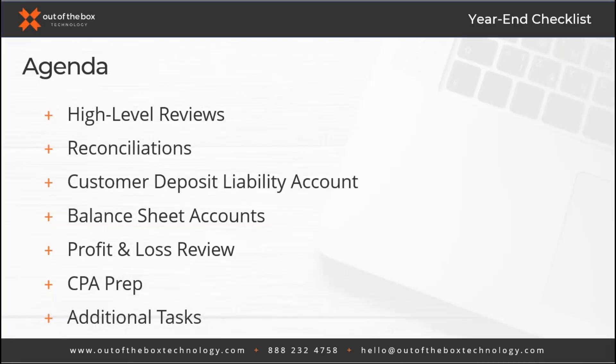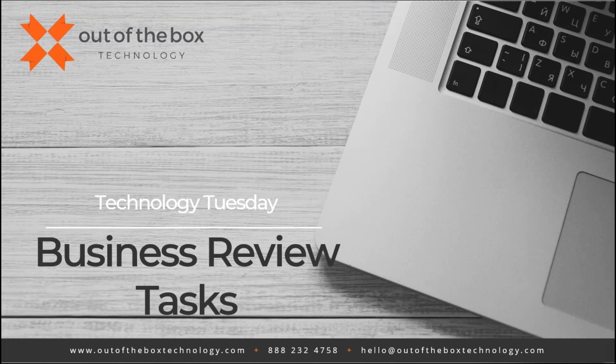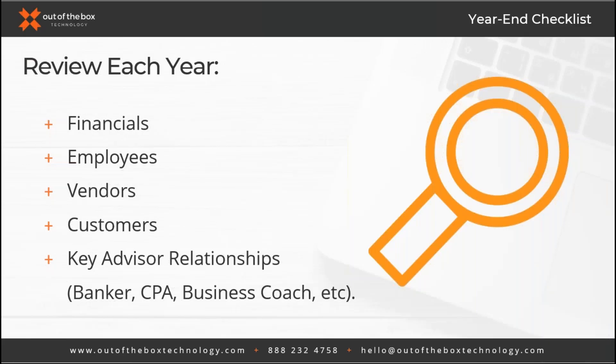Just a brief look at our agenda today: Tracy is going to go over some high-level areas of your business that you'll want to review at the end of each year at a minimum. Some of these could be done throughout the year multiple times, including reconciliation, deposit accounts, your balance sheet, your P&L, and some things to help prep for when you give your information over to your CPA.